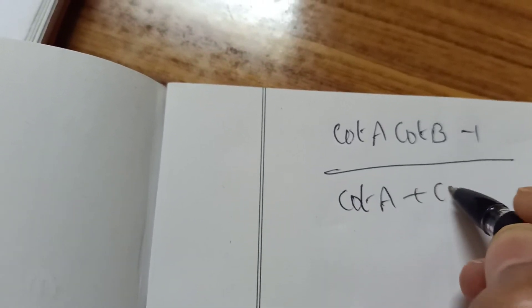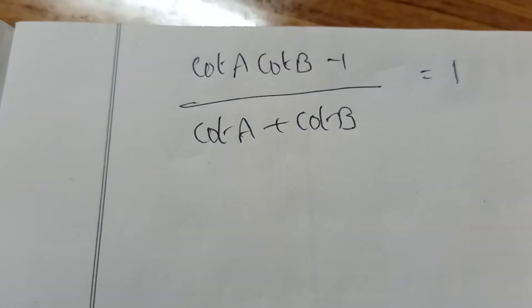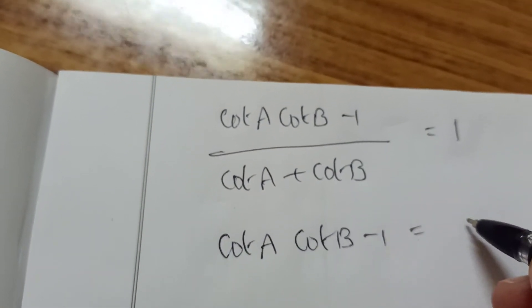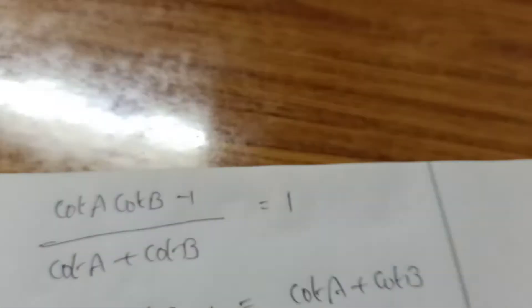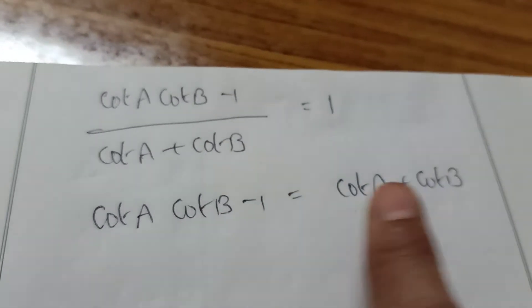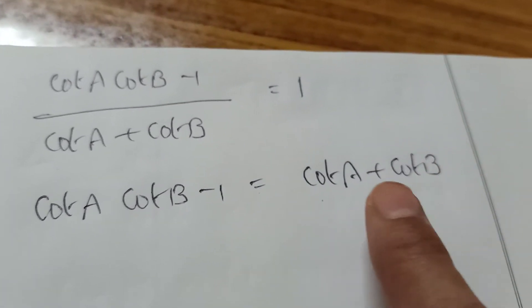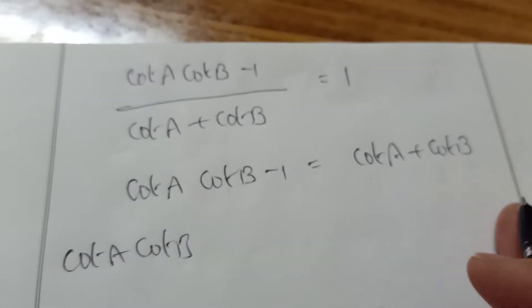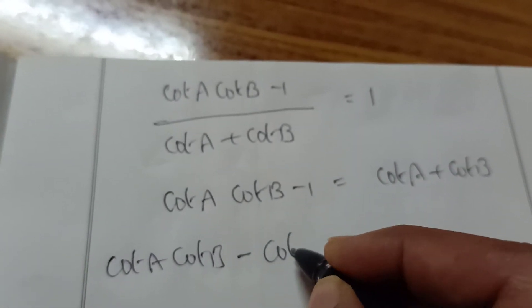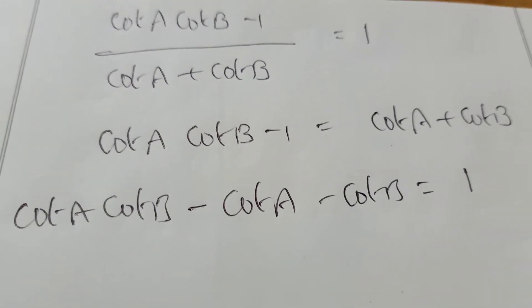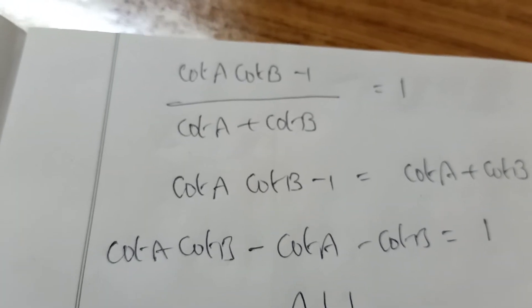Apply the formula: cot A cot B minus 1 divided by cot A plus cot B equals 1. Cross multiplying: cot A cot B minus 1 equals cot A plus cot B. Send the cot A and cot B terms to the left side — they become negative. So cot A cot B minus cot A minus cot B equals 1. We want plus 1, so add 1 on both sides.